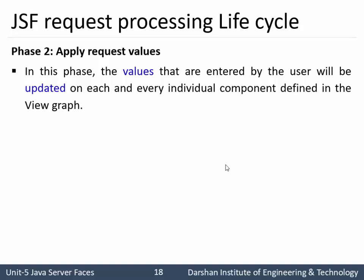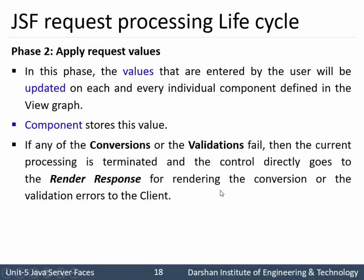If it is a new request, a new component tree is designed in Phase 2. Components store the values entered or selected by the client. If any conversion or validation fails, the current processing is terminated and control jumps directly to Phase 6 - Render Response - to render the conversion or validation error to the client as an appropriate HTML page. So if validation or conversion fails, processing switches from Phase 2 directly to Phase 6.